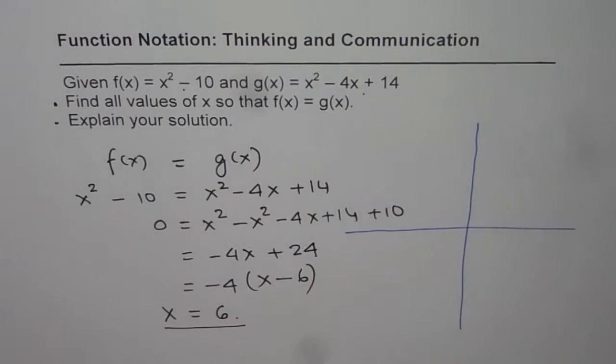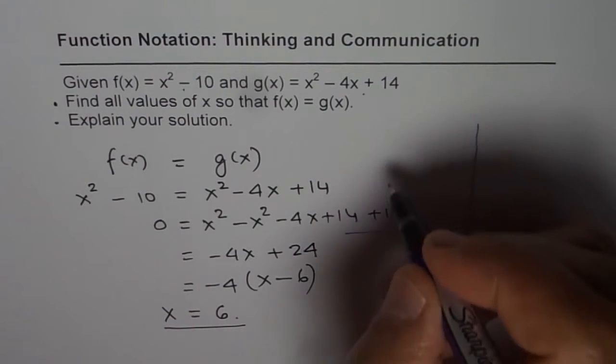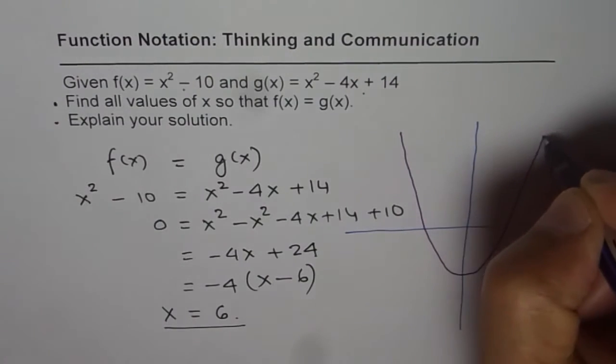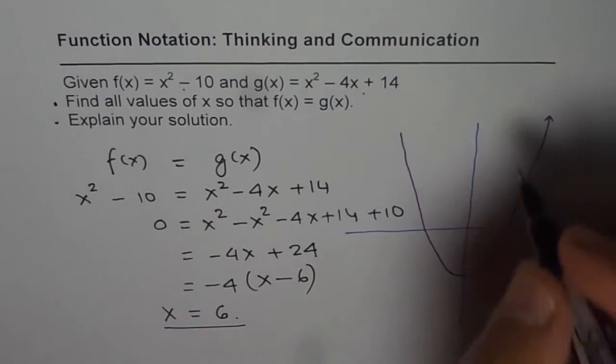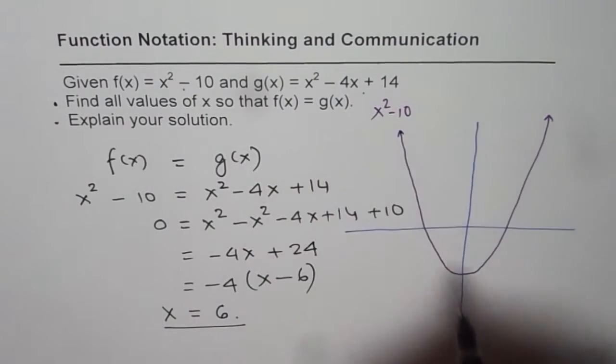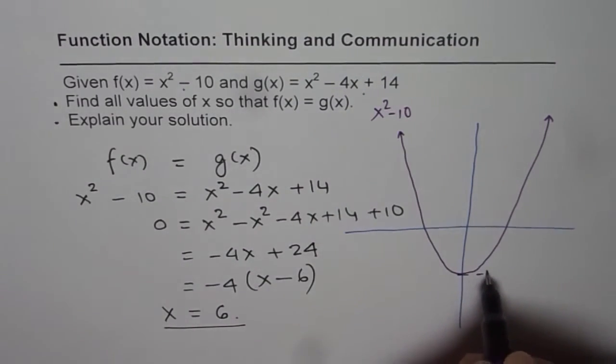If you plot these graphs, f of x equals x square minus 10, that means it will be a parabola which goes down 10 units and then goes up like this. That could be your function x square minus 10, where this point is at minus 10.